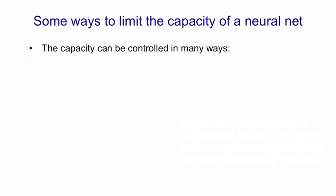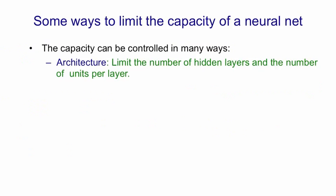So there's many ways to control the capacity of a model. The most obvious is via the architecture. You limit the number of hidden layers and the number of units per layer, and this controls the number of connections in the network, i.e. the number of parameters.